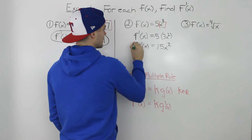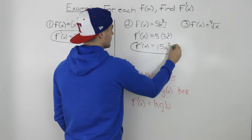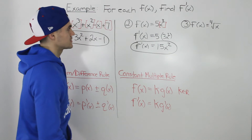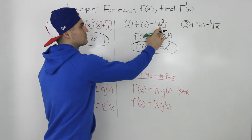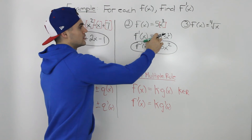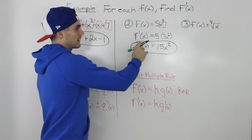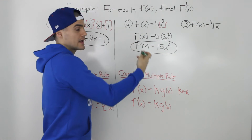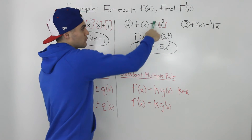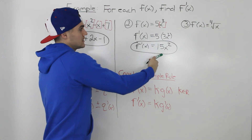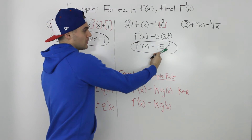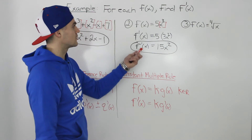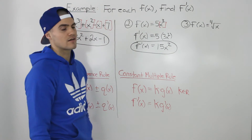So that is the derivative of 5x cubed. Whenever you see a constant in front, you can just multiply that constant with whatever number you're bringing down. We brought the 3 down, 5 times 3 is 15, then subtract 1 from the exponent and we're left with x squared.